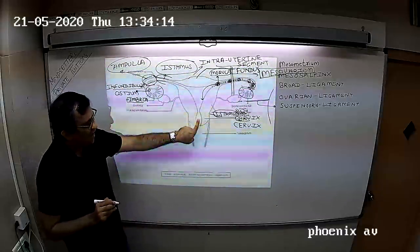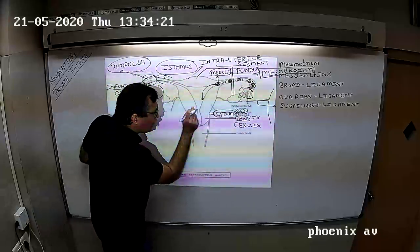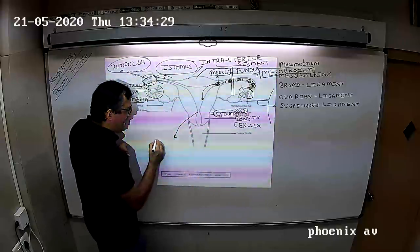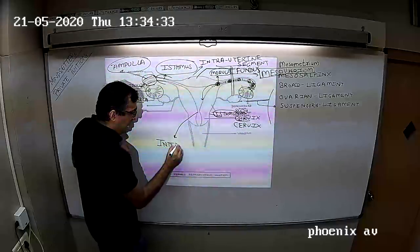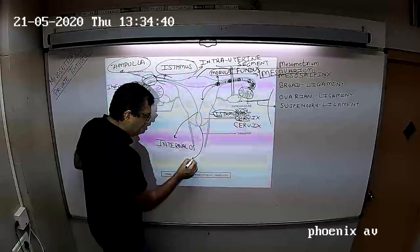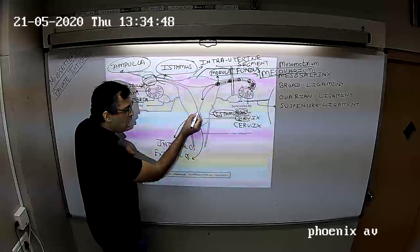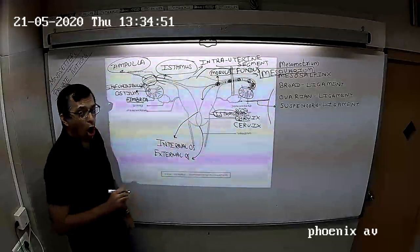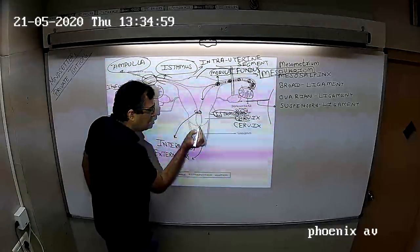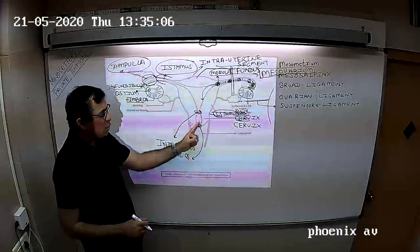The cervix has a narrow part at the junction with the body called as the internal os, and the little opening into the vagina is called as the external os. We have internal os and external os, and both are guarded by sphincters. Even the cervix has sphincters, just as the urethra has sphincters.